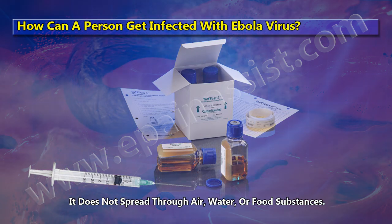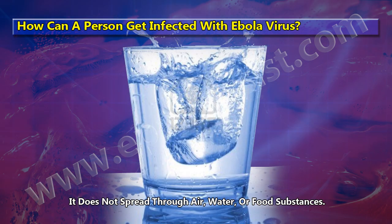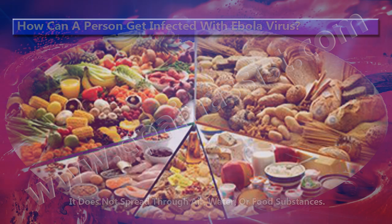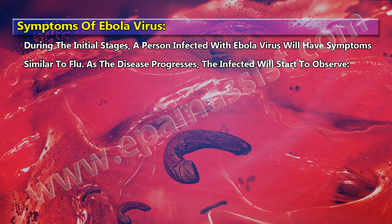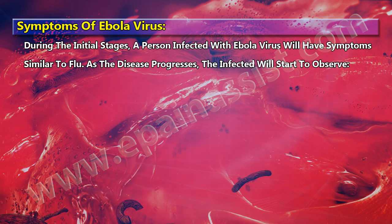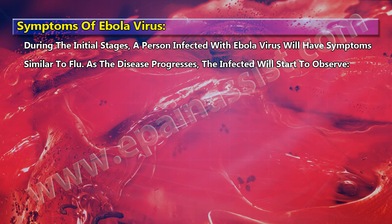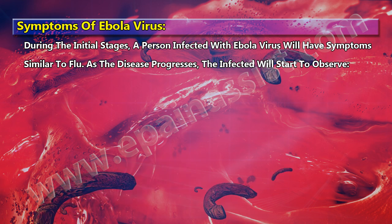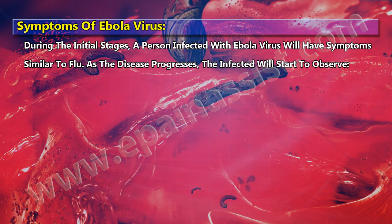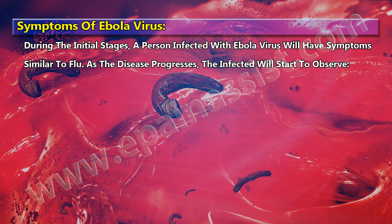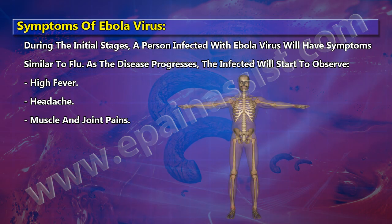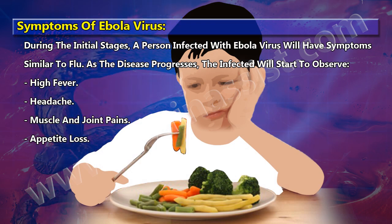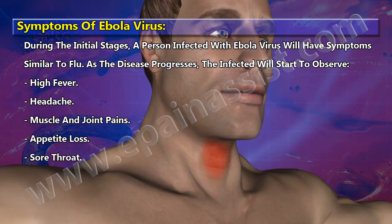Ebola virus does not spread through air, water, or food substances. During the initial stages, a person infected with Ebola virus will have symptoms similar to the flu. As the disease progresses, the infected person will start to observe high fever, headache, muscle and joint pains, appetite loss, and sore throat.